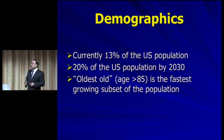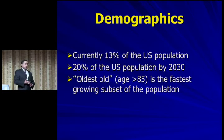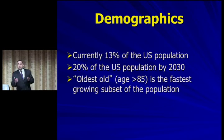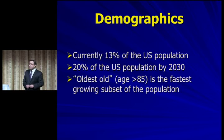By the year 2030, 20% of first world country populations are going to be over 65. Geriatricians divide the elderly into three groups: the young old (65–75), middle old (75–85), and old old (over 85). The old old group is the fastest growing subsegment of the U.S. population, so we're going to be seeing more of the oldest of the old than ever before.